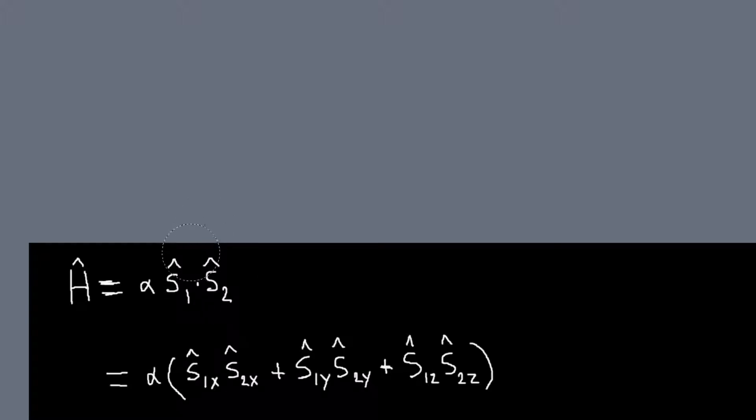S1 and S2 are vectors of operators, so their components are these operators. Their dot product you just work out like any normal dot product. And alpha is just a proportionality constant, so it's just some number.